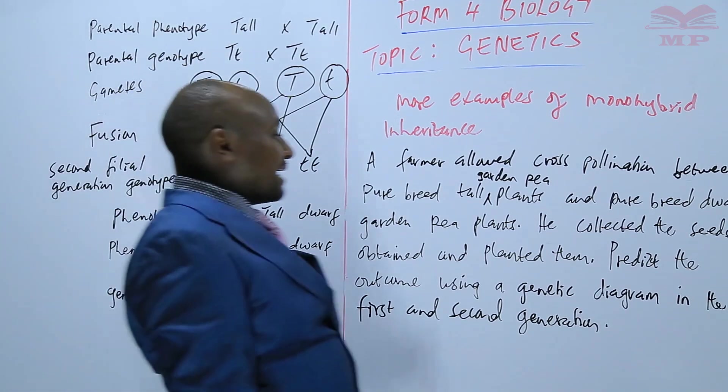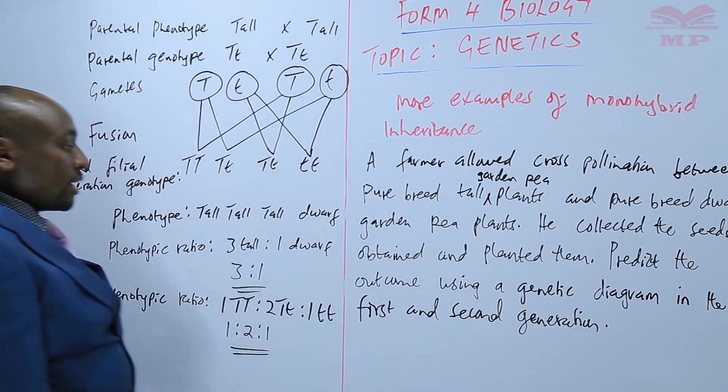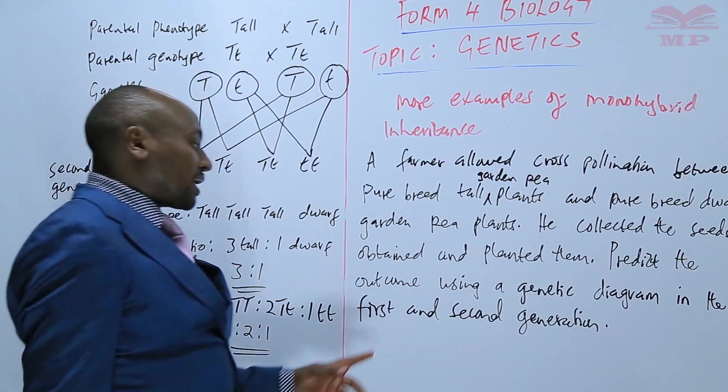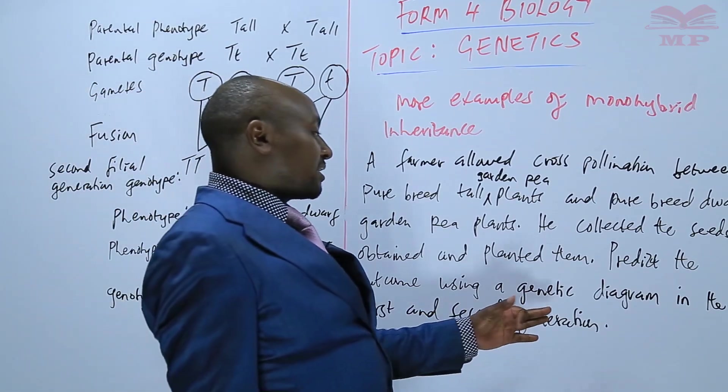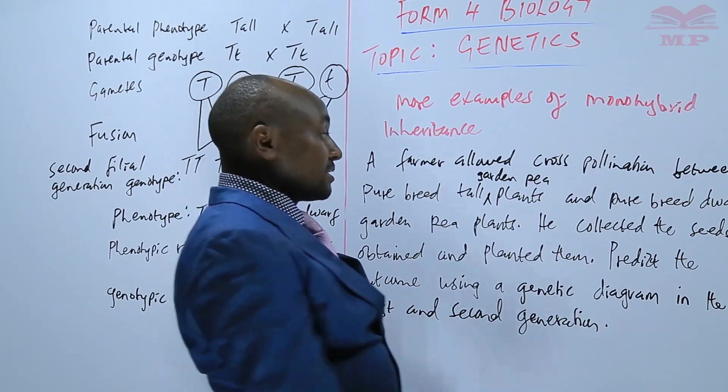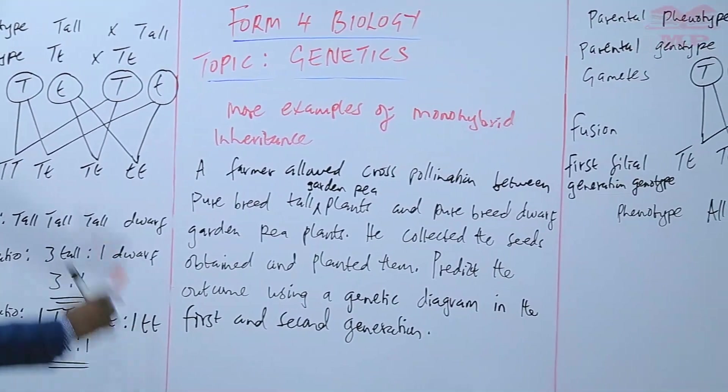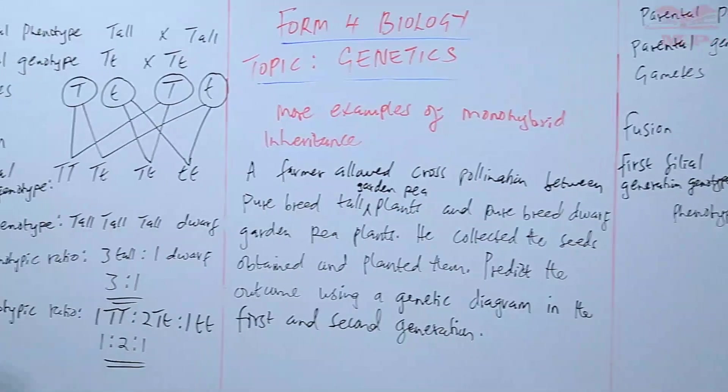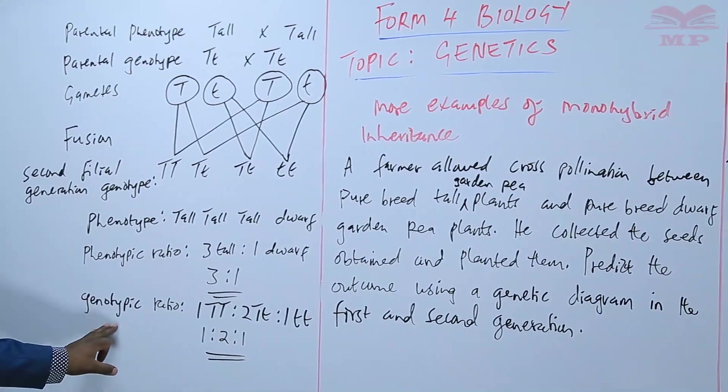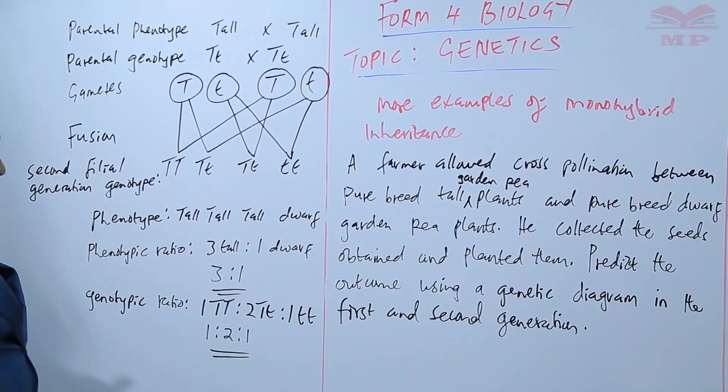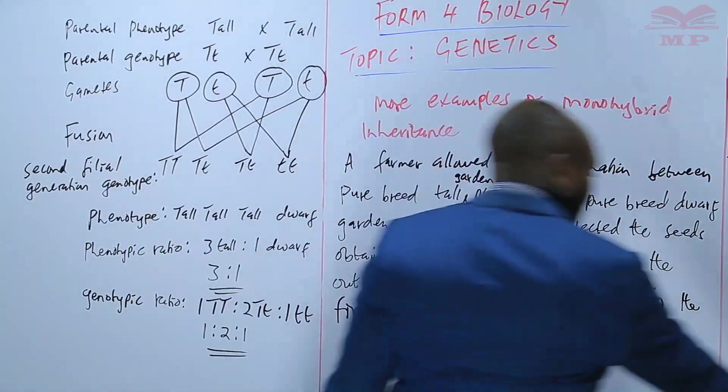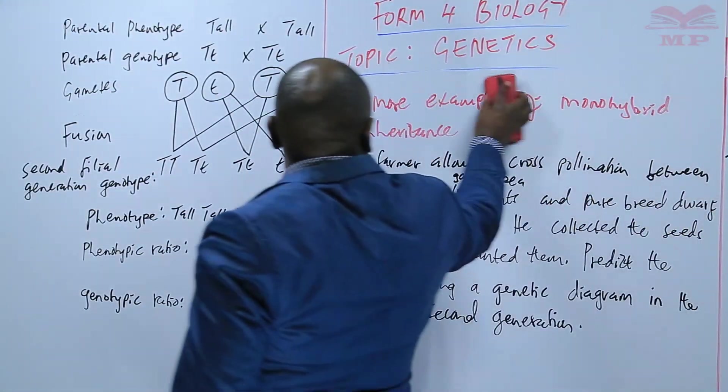We have answered the question whereby we are told to predict the outcome using the genetic diagram in the first generation and the second generation as we can see from this.